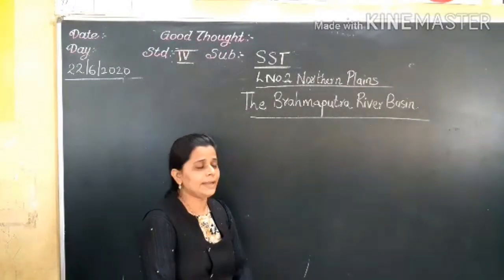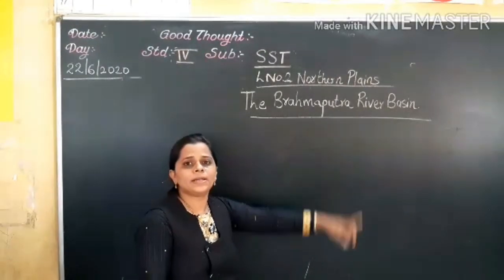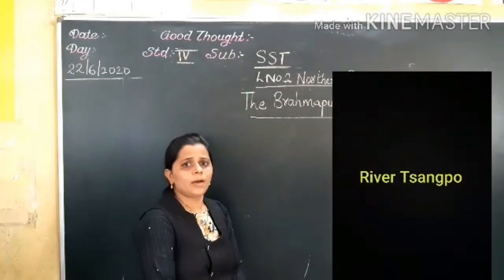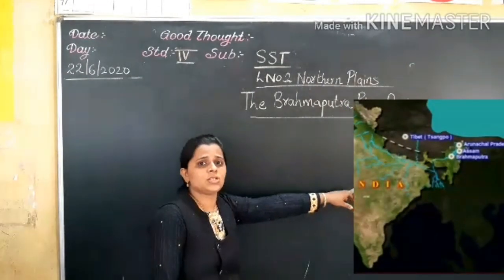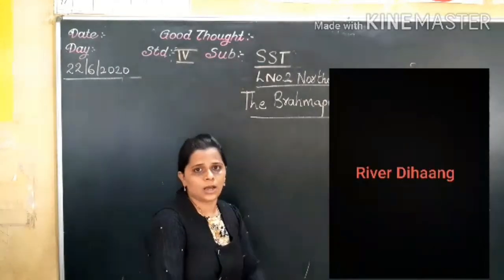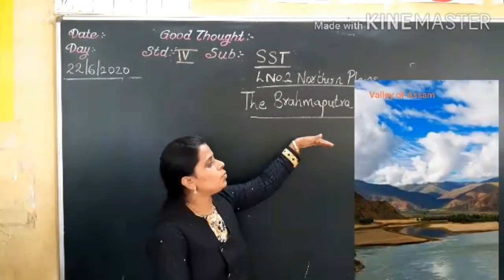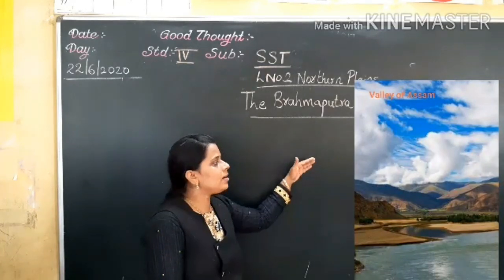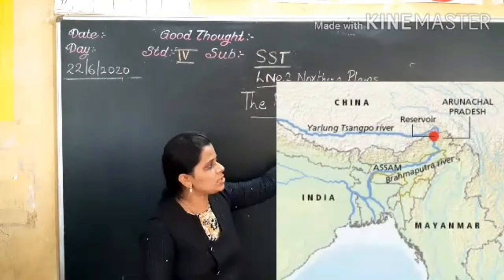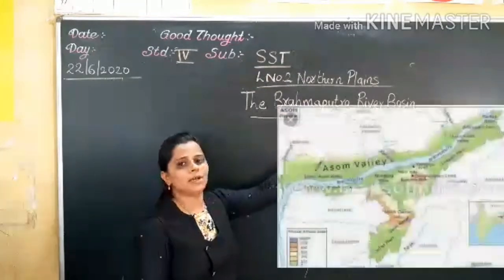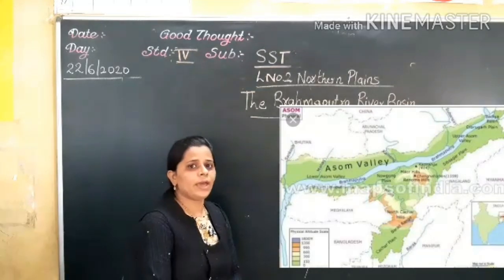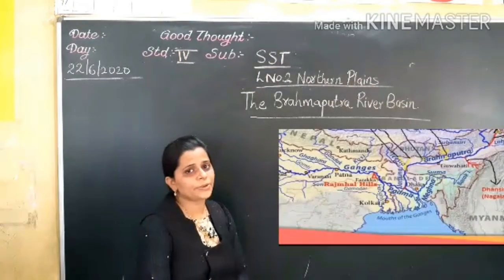As I mentioned, this river is known by different names in different places. When it is in Tibet it is known as river Sanko, but when entering India through Arunachal Pradesh this river is known as river Dhihaan. As it flows through the valley of Assam it takes a turn to the south to enter Bangladesh, where it meets river Padma, a distributary of the Ganga.